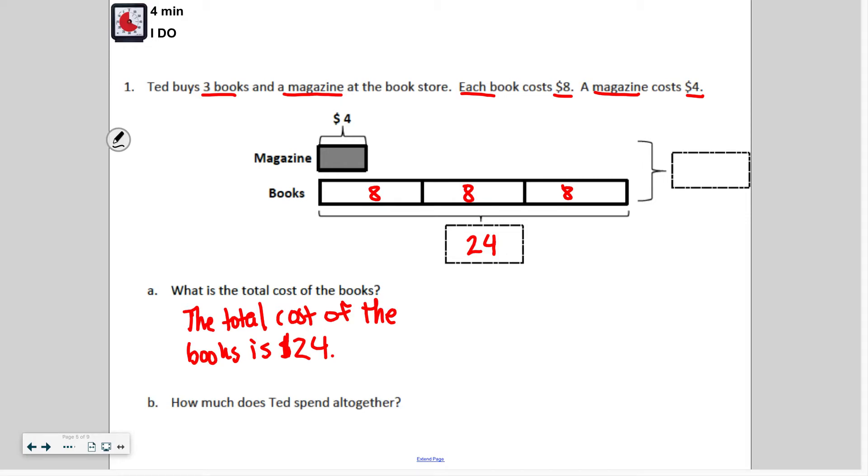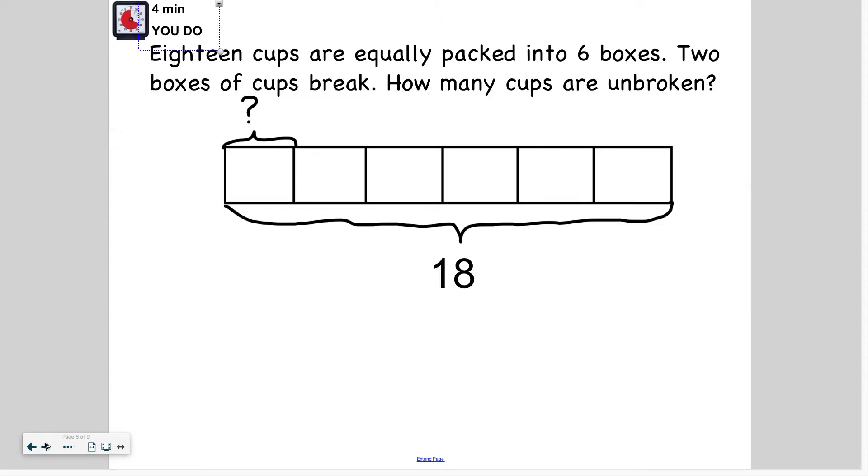Now $24 plus the $4 for the magazine gives me $28. So Ted spends $28 altogether. Again, these are two-step problems, so there's always going to be more than one step you need to complete. In this case, I had to find the cost of the books first, then add that to the magazine cost to find the total. There were two questions here, but there may not always be two questions. Keep that in mind - even when there's one question, there will still be two steps for all the problems we do. Go ahead and try this one. We'll read it together.